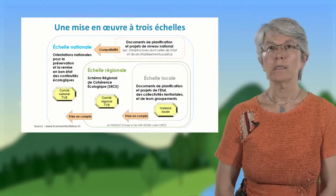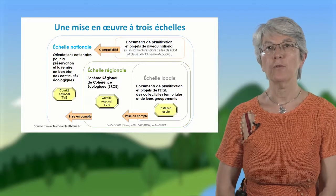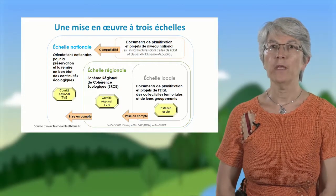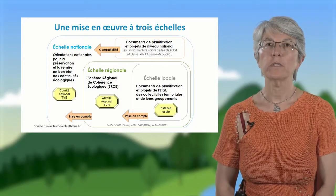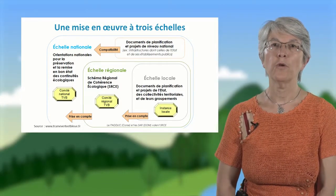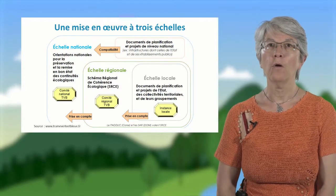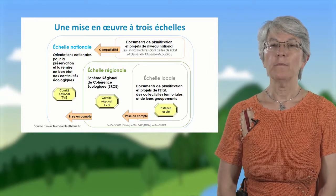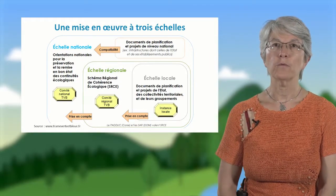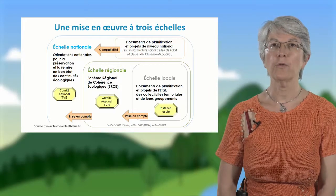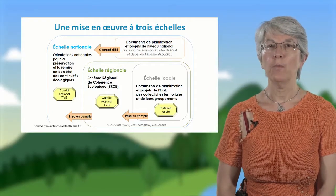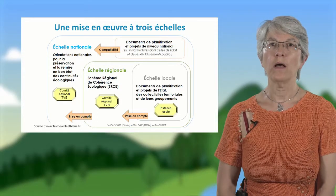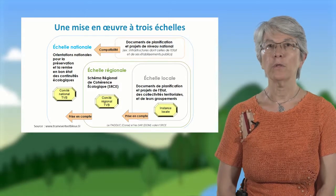À l'échelle régionale, ce sont les schémas régionaux de cohérence écologique qui vont définir la trame verte et bleue régionale et des plans d'action. Ces schémas régionaux de cohérence écologique ont été mis en œuvre entre 2010 et 2015 dans toutes les régions, en co-construction avec les acteurs locaux. Ils doivent être respectés par les documents de planification type SCOT, schémas de cohérence territoriaux, et documents d'urbanisme, comme les plans locaux d'urbanisme pour les communes, et par tous les projets d'aménagement avec l'étude d'impact qui prend en compte les continuités écologiques.